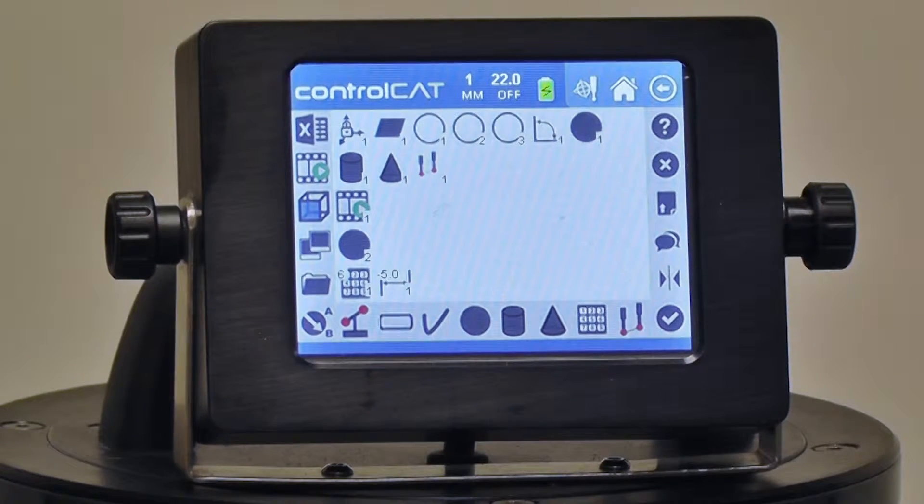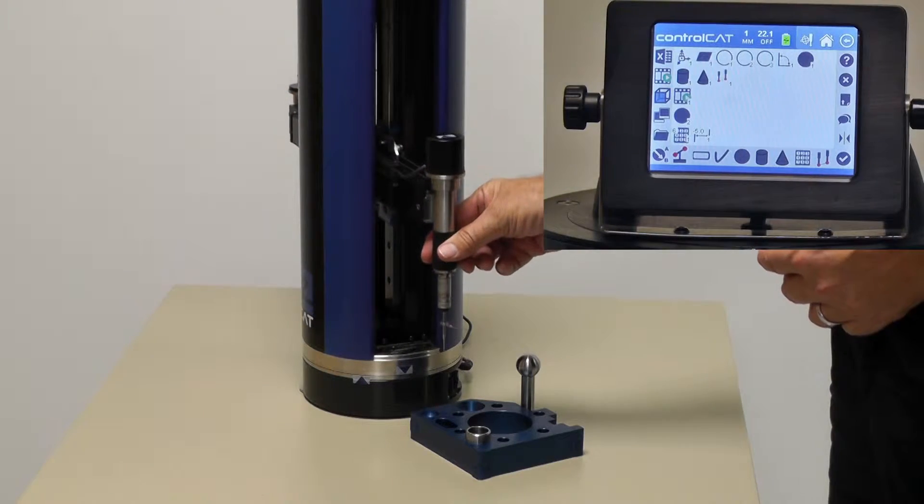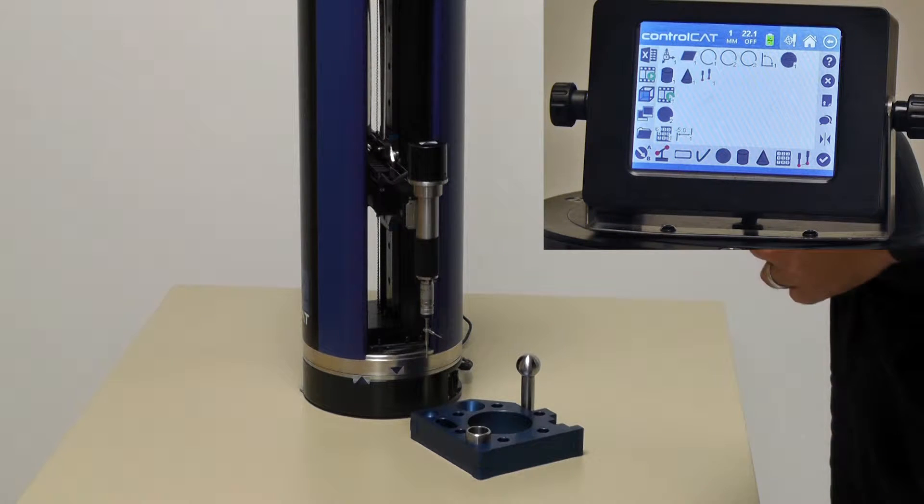One of the things that everybody needs to be able to use when using a Zcat or pretty much any CMM is what we call a go-to. We want to be able to drive the probe around an object or something.